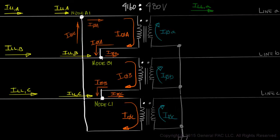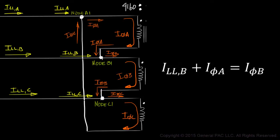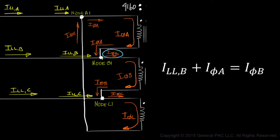Similarly, for Node B1: Line Current B and Phase Current A are flowing into Node B1, but Phase Current B is flowing out of Node B1. Therefore, Line Current B plus Phase Current A equals Phase Current B.